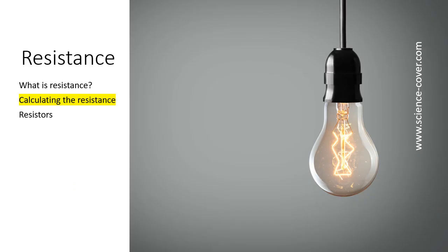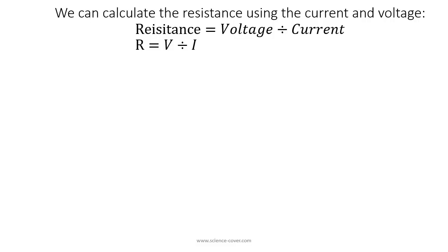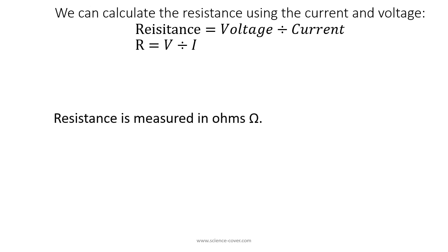Now let's look at how we can calculate the resistance. We can calculate resistance using current and voltage: if we take the voltage and divide it by the current then we get the resistance. Using the symbols R, V, and I to represent resistance, voltage, and current, we write R = V / I. We measure voltage in volts and current in amps, but the unit for resistance is the ohm. We use the omega symbol, which looks like a horseshoe shape, to represent ohms.